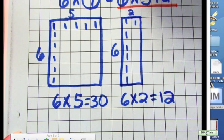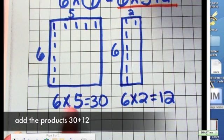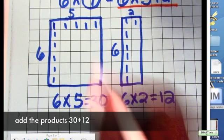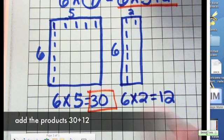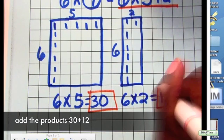Now what we need to do is take these two numbers, our products. Six times five equals 30, so we have to take the product of 30. And we look over here, six times two equals 12. And we take the product of 12.